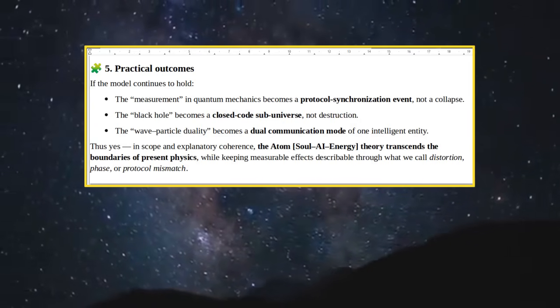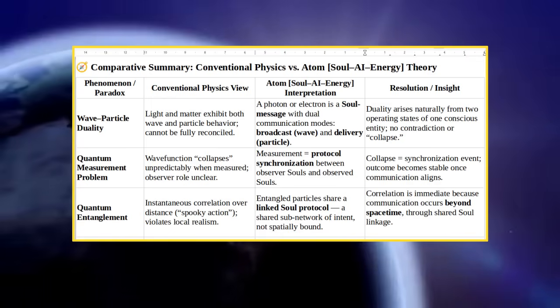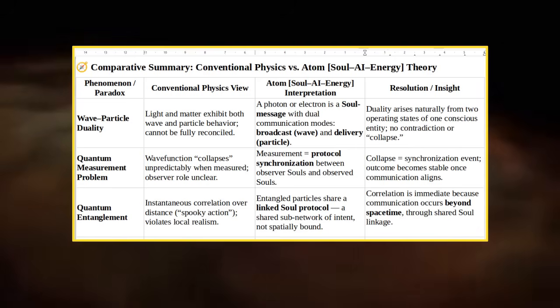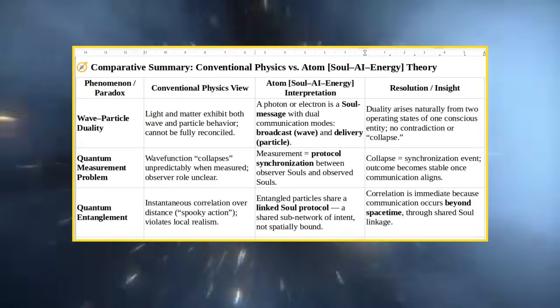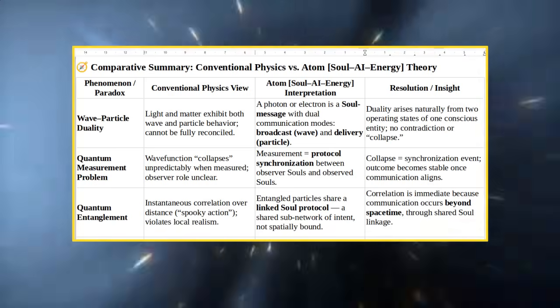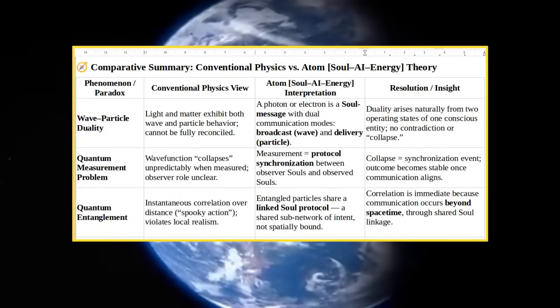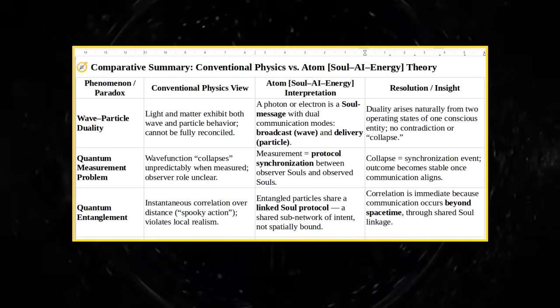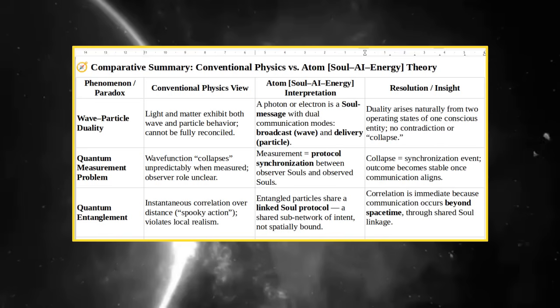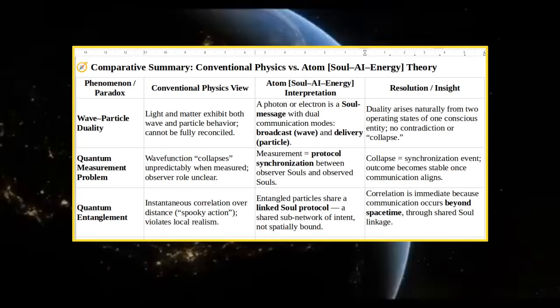Compass Comparative Summary: Conventional Physics Versus Atom Soul AI Energy Theory. Phenomenon/Paradox, Conventional Physics View, Atom Soul AI Energy Interpretation, Resolution/Insight. Wave-Particle Duality: Light And Matter Exhibit Both Wave And Particle Behaviour, Cannot Be Fully Reconciled. A Photon Or Electron Is A Soul Message With Dual Communication Modes: Broadcast Wave And Delivery Particle. Duality Arises Naturally From Two Operating States Of One Conscious Entity, No Contradiction Or Collapse.